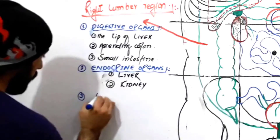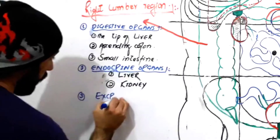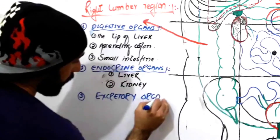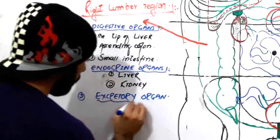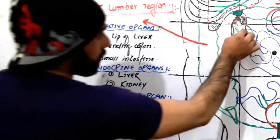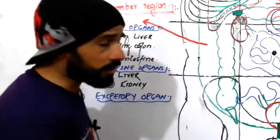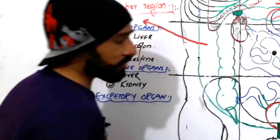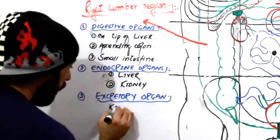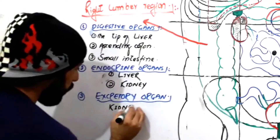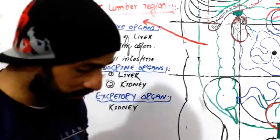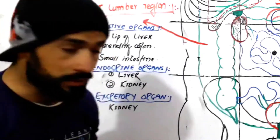The excretory organ found in the right lumbar region is the kidney. The kidney plays a very important role in the excretion of different substances and performs osmoregulation. So the kidney is found in the right lumbar region and plays its role in excretion of different substances from our body.